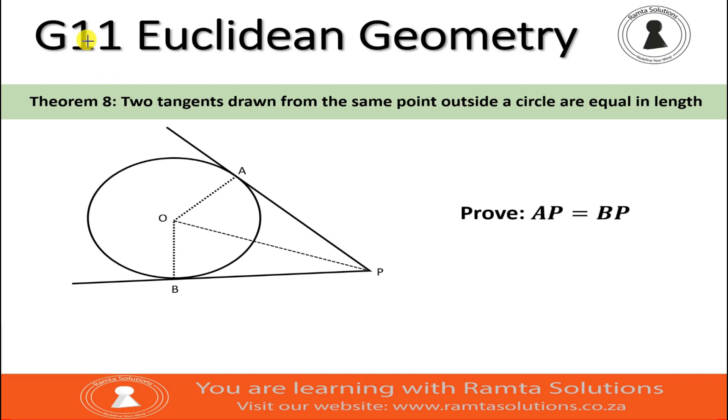So, just like we've been doing with other theorems, let's look at the statement here. The statement for this theorem says, if two tangents are drawn from the same point outside a circle, then they are equal in length.